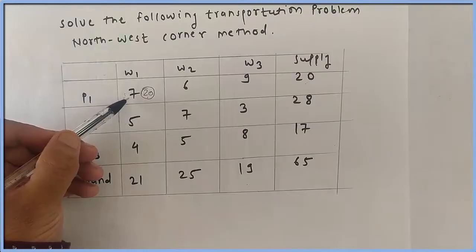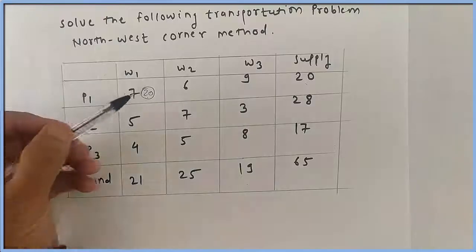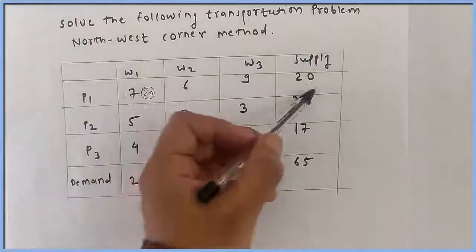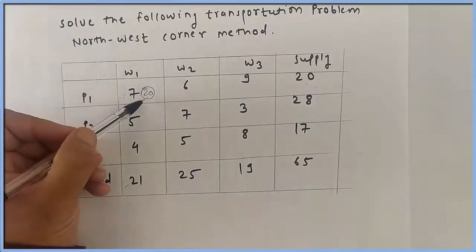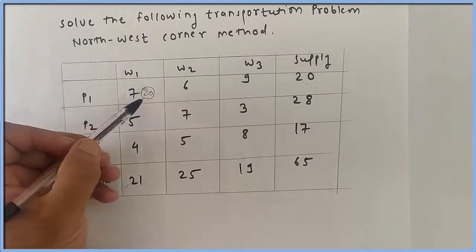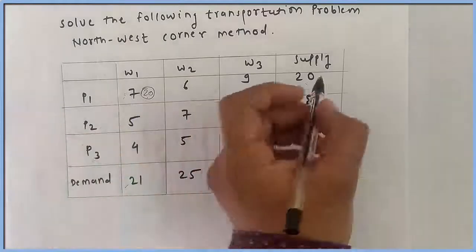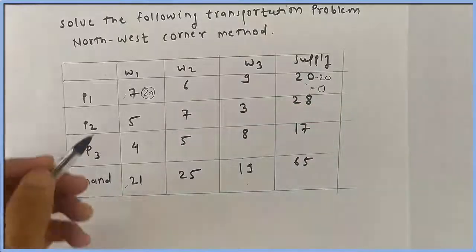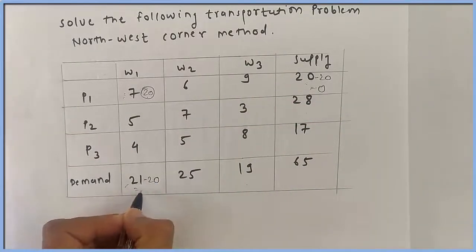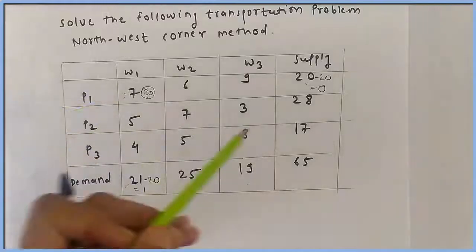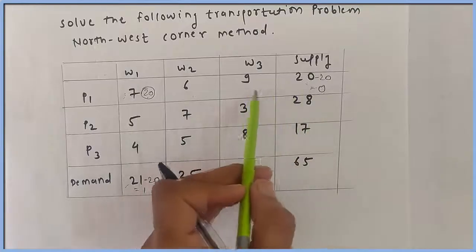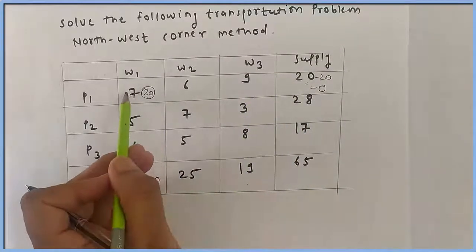For the examination, here is a simple technique: your supply is 20 and your demand is 21. Always allocate the lesser unit. The lesser of 20 and 21 is 20, therefore we allocate 20 units here. After this allocation, supply becomes 20 minus 20 equals 0, and demand becomes 21 minus 20 equals 1. Since this supply becomes 0, we cannot allocate any units to the remaining cells in this row, so we cancel this row.